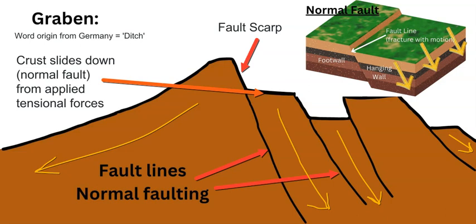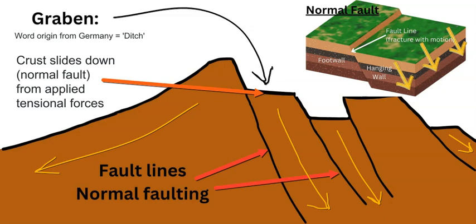Normal faults are caused by tensional and extensional forces applied to the crust. When these forces pull the rock apart, they break the rock, cause fractures and fault lines, and have one side slip downward — that is a normal fault. This creates the graben along with the fault scarp, and this visible indentation in the terrain can occur on both sides of the rift valley or on just one side.